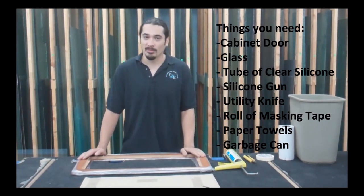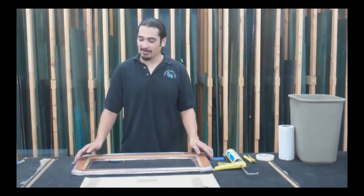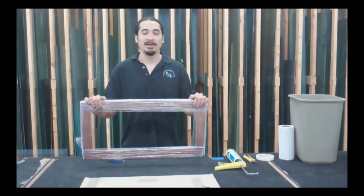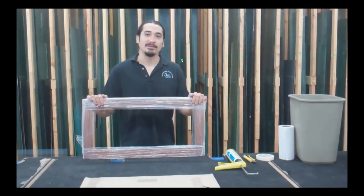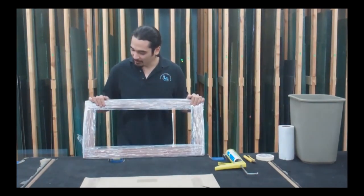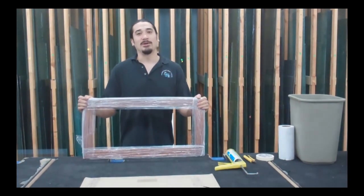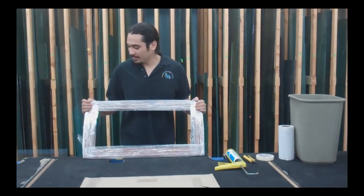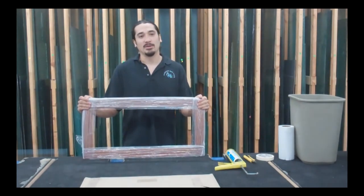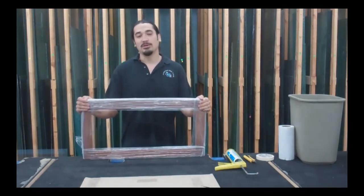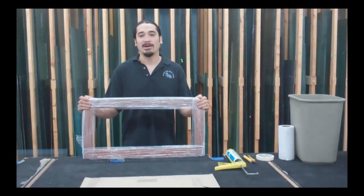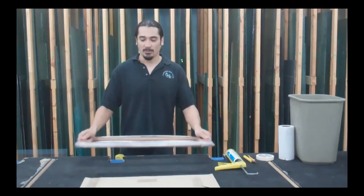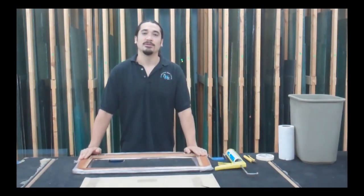Now it's very important before we get started that you protect the front of your cabinet door from getting scratched. Putting all this effort into making your cabinet door look beautiful, you want to make sure that we don't ruin it. So I wrapped up this cabinet door in plastic, but if you don't have plastic wrap, you can use a moving blanket or a towel to put on the table so during the installation your door is protected.